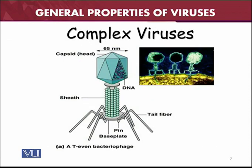Some viruses are very complex, like the T-even bacteriophage shown here. It has a capsid of about 65 nanometers and contains DNA inside, making it a DNA virus. The sheath is helical in shape while the capsid containing the nucleic acid is icosahedral. It also contains tail fibers and pin base plates. Bacteriophages are really very complex structures, making them difficult to handle. An electron microscope image is also provided.